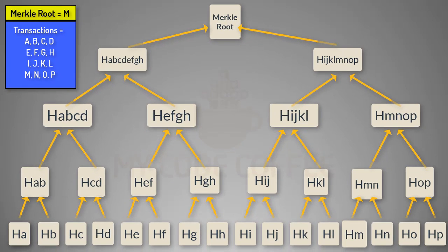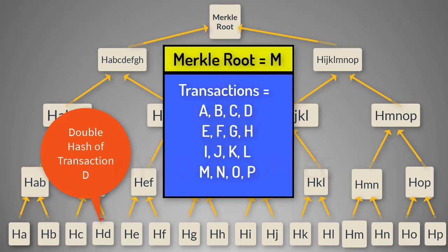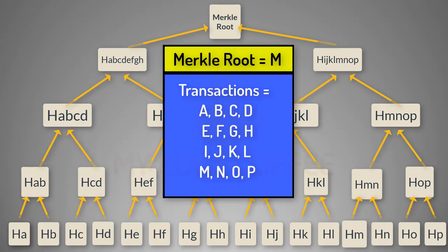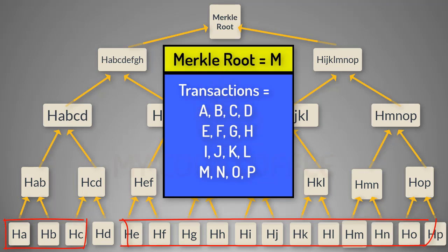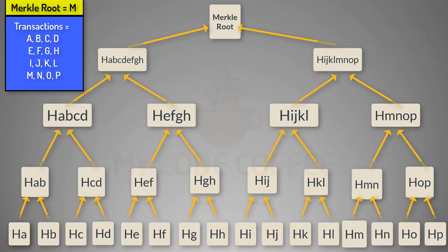If the Merkle root that you calculated is equal to the Merkle root in the header of this block, then all 16 transactions belong to this block. But let's say you are interested in only one transaction — you want to know if transaction D belongs to this block or not. You need to prove that the hash of transaction D, which is HD, is a leaf node of the Merkle tree whose Merkle root is this. If you have the remaining 15 transactions, you can calculate the Merkle root and prove that this transaction belongs to the same block.